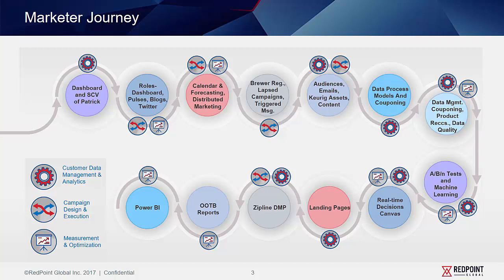Next, we'll view how this is all possible for the marketer within the Redpoint Customer Engagement Hub solution. We'll show dashboards on how to access a single view of the consumer. We'll show how to access and manage roles, calendar, forecasting, and distributed models. Next, we'll show campaigns and triggered messages including how to create audiences, emails, and assets. Then we'll show how to apply analytics to campaigns to assign coupons or automate segments. We'll take a quick peek at product recommendation capabilities and the underlying data management capabilities that make this possible. Then we'll show how ABN tests are constructed along with real-time decisions for web pages. We'll briefly discuss how to construct landing pages. And to close out, we'll show how to access DMP data and descriptive analytics through out-of-the-box reports and hooks into best-of-breed solutions like Power BI.